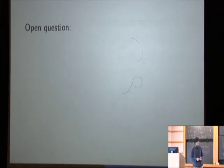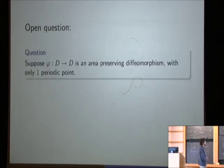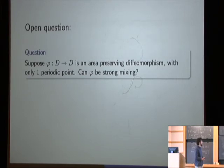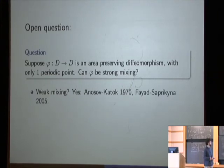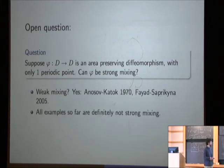So none of the examples known, all of the examples known are known to be not strong mixing. So they're ergodic, and then a slightly stronger statement is weak mixing, and then even stronger is strong mixing. And it's known all the constructions are not strong mixing, but they can be made weak mixing. So it's an open question: Does there exist an area-preserving disk map with only one periodic point that is actually strong mixing? And weak mixing was done in many cases in the original paper by Anosov and Katok, and then taken further by Fayad and Saprykina more recently. And all the examples that are known are not strong mixing, but it's still open whether they even exist.